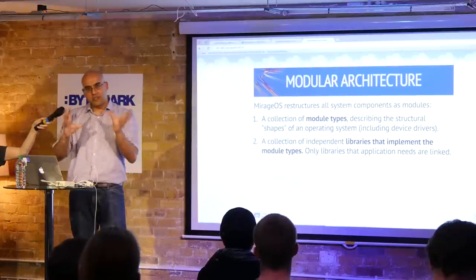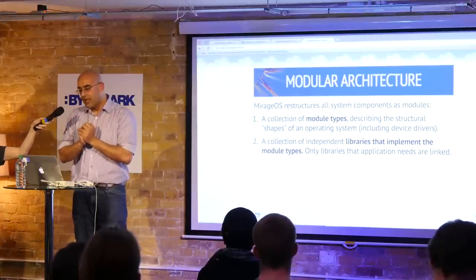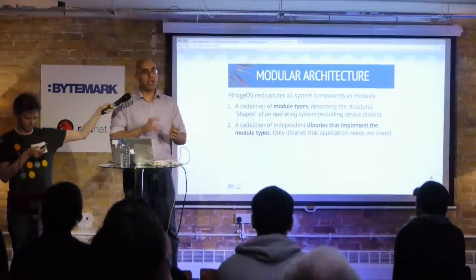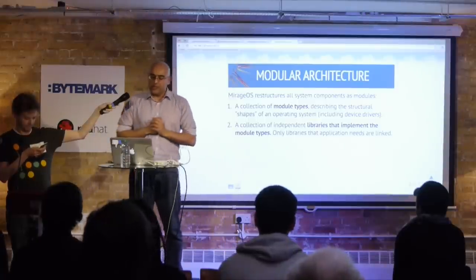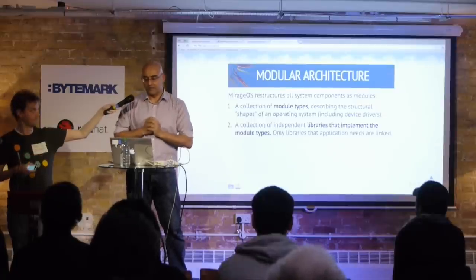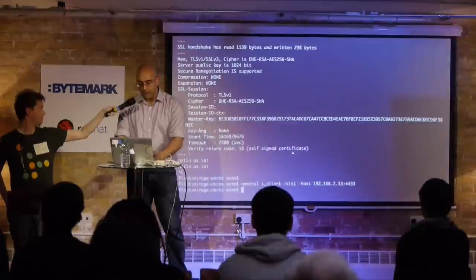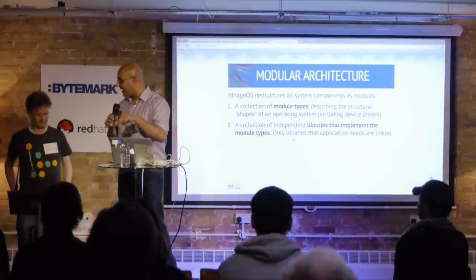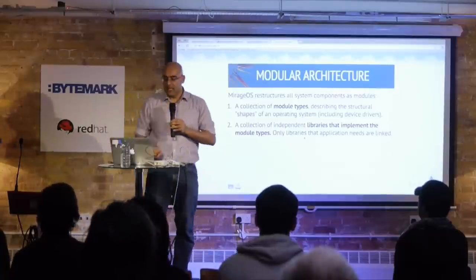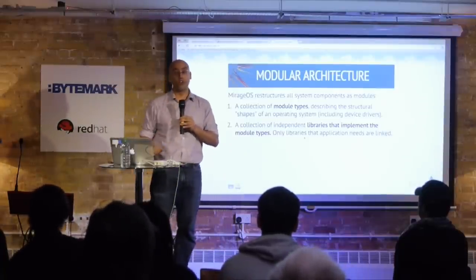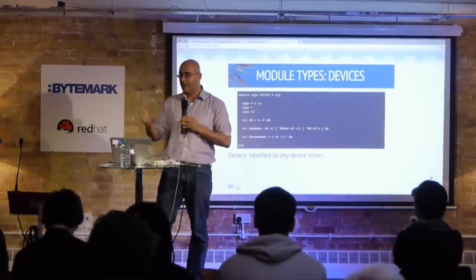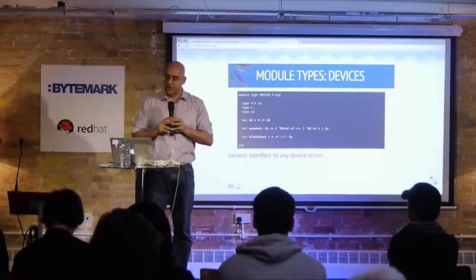The essence of Mirage — what makes it different from all other unikernels — is this modular architecture. It's a bit like a child's game where you have to fit the square peg in the square hole. We define a collection of module types, and these module types describe the structural shape of a particular part of an operating system. For example, I can define a device driver shape: it has some type of I/O that can do blocking operations, some abstract state representing the device, and an identifier — an attach string used to identify the device. We define functions: given your state, can you give me back your identifier? Given an identifier, can you connect and give me back an error or a state? And then disconnect.